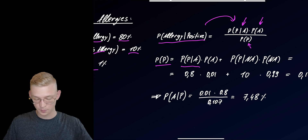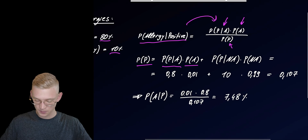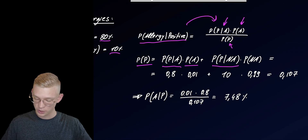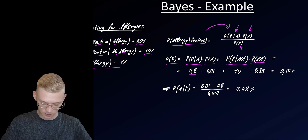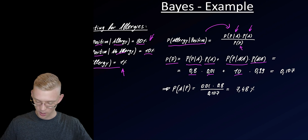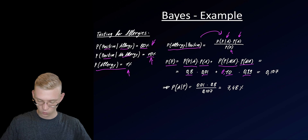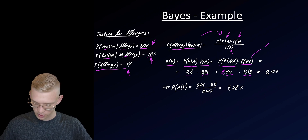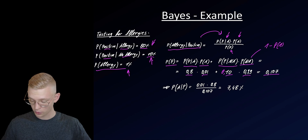To get the probability of the test being positive, we use the sum rule: probability of test positive given an allergy times probability of an allergy, plus probability of test positive given no allergy times probability of no allergy. We know all these numbers: 0.8 times 0.01, plus 0.1 times the probability of no allergy, which is 1 minus probability of allergy. This gives us 0.107.